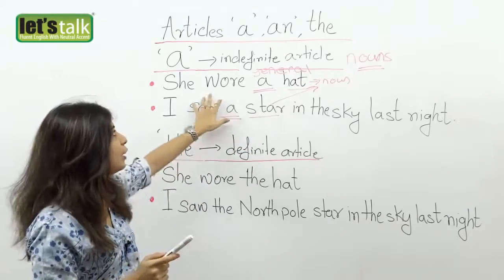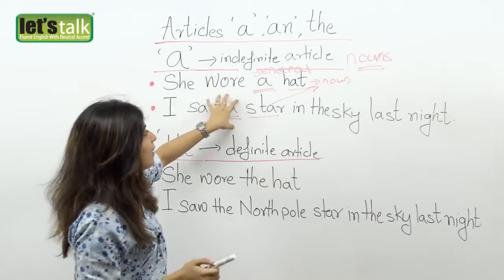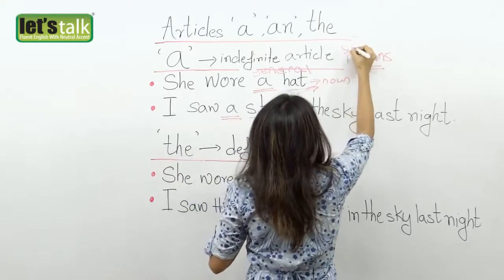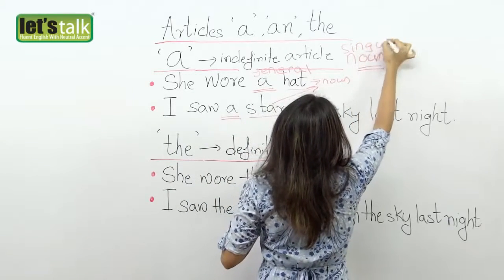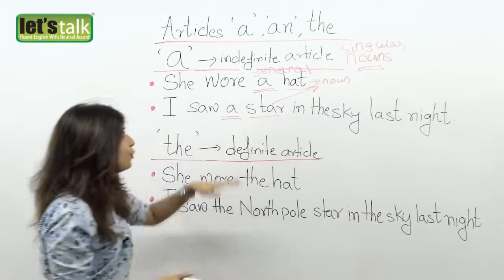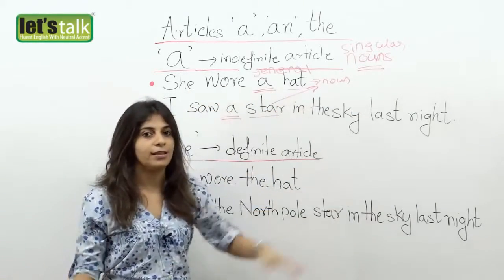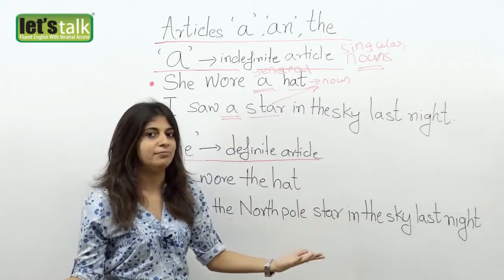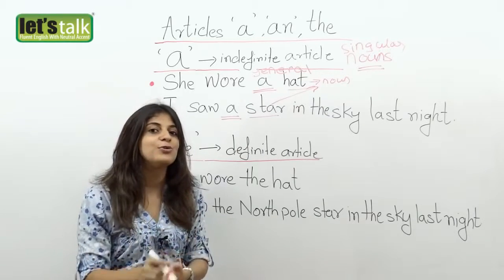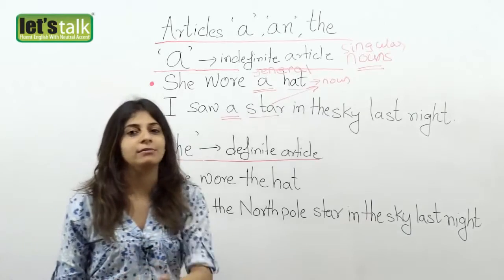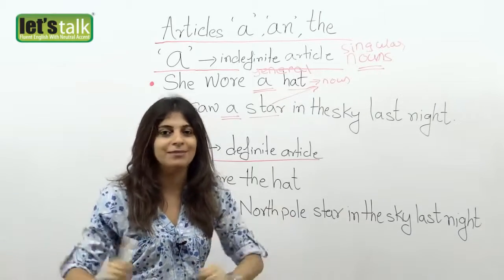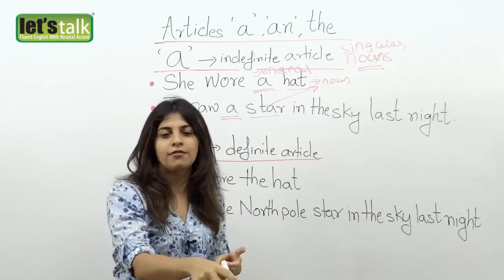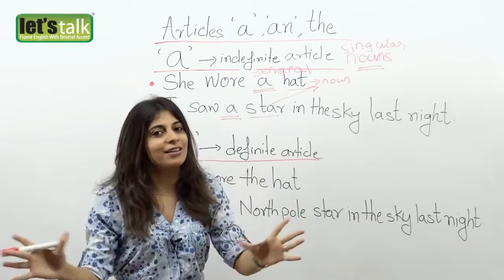Another important thing about this article is that it is used for a singular noun. You would not say 'she wore a hats' — that's incorrect. Or 'I saw a stars' — that doesn't sound right. So it's always used for a singular noun. For example, 'I want a cookie.' It's not a specific cookie — you're not saying the third or fourth cookie from the packet. It's just a cookie in general.